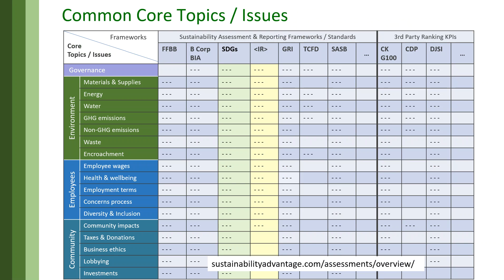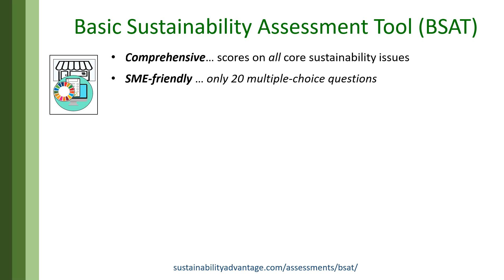I did a comparison of all of these frameworks, giving a column to each in a massive spreadsheet that is downloadable from my website. What it shows is they are all basically asking about the same 18 things: governance, seven environmental things — materials, energy, water, greenhouse gas emissions, etc. — five employee-related things, and five community-related things. So five, five, seven, and one — that is 18 things. The Basic Sustainability Assessment Tool covers all of those.